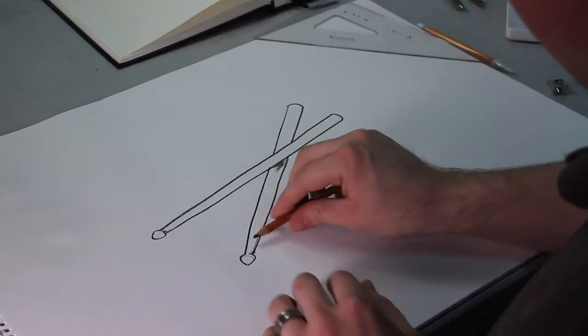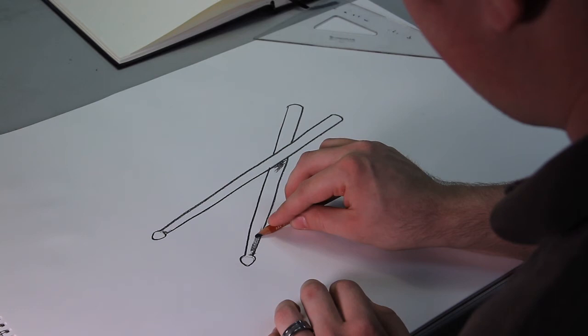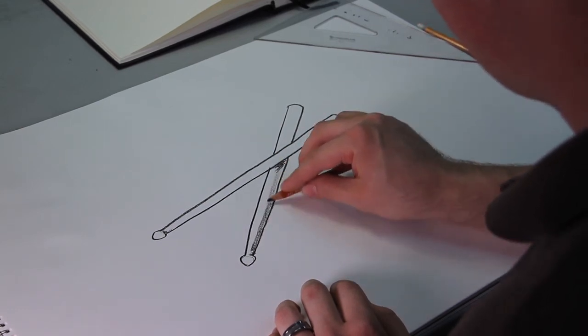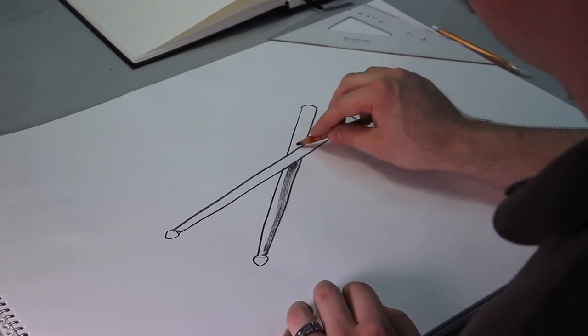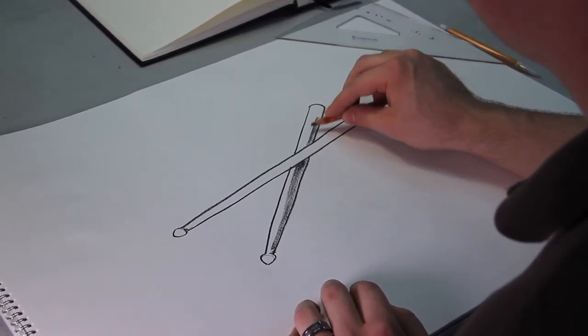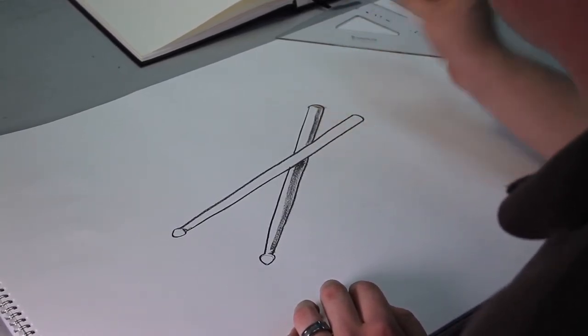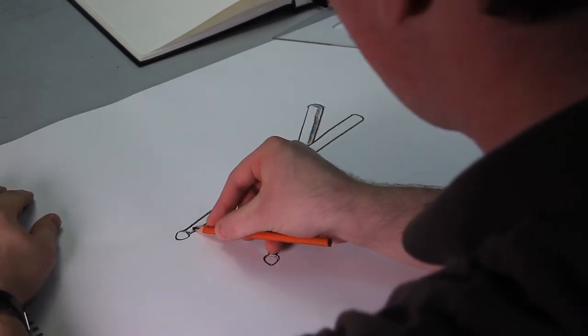Probably easy to use the side of your pencil like this when drawing a shadow on a cylindrical object like this. So we'll just go like this, kind of like that, and the same thing right here.